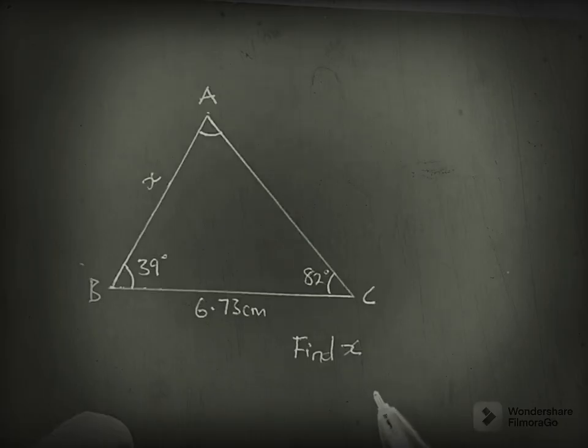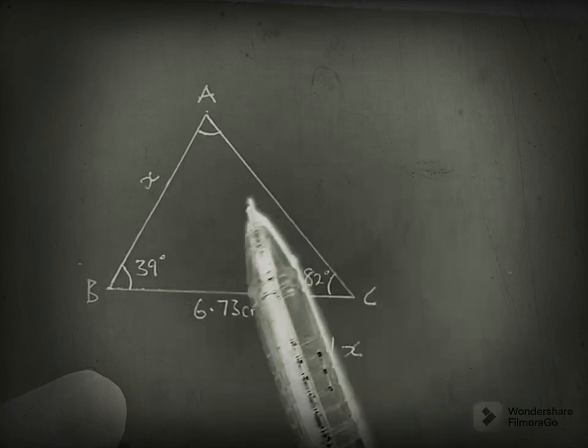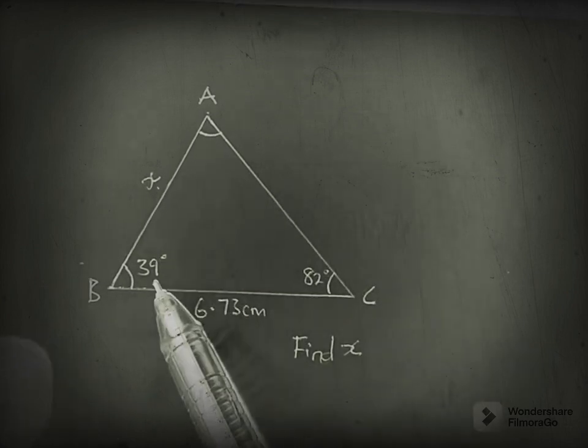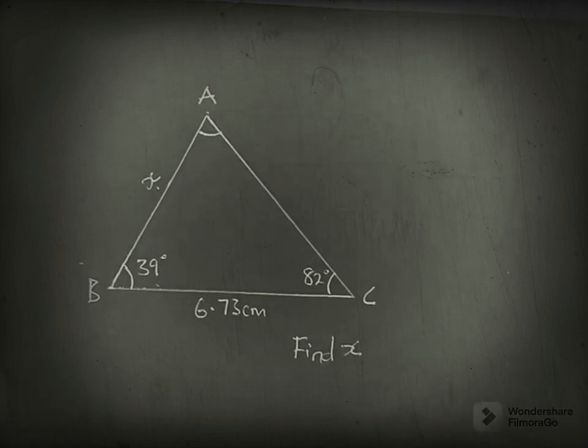So you're asked to find x here. As I already said, using sine rule, we are able to find sides or angles in a triangle that is not a right angle. So from here, let's establish the relationship.